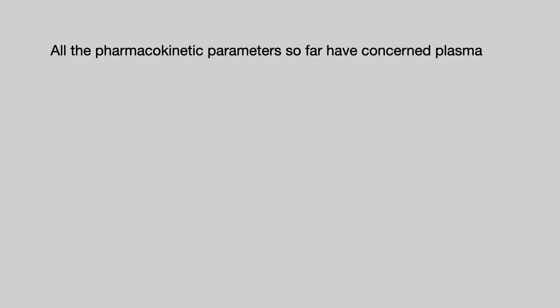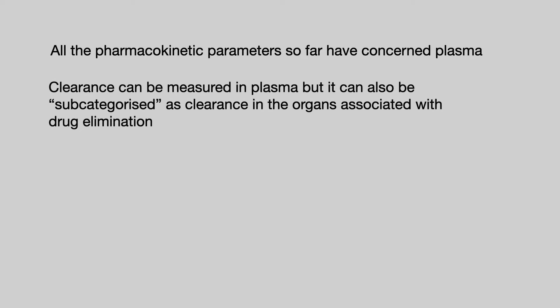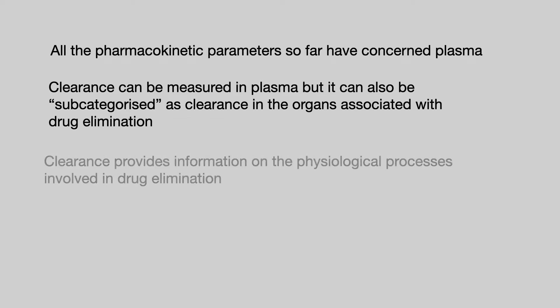All the pharmacokinetic parameters we've looked at so far have been measured in plasma. Clearance can also be measured in plasma, but it can also be subcategorised as clearance in the organs associated with drug elimination. As such, clearance provides information on the physiological processes involved in drug elimination.